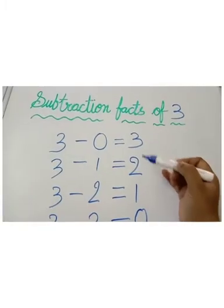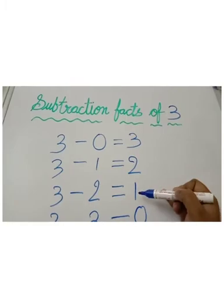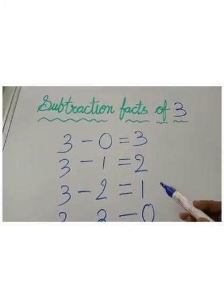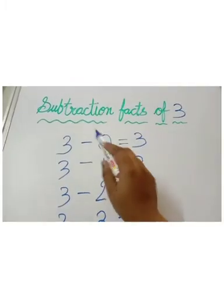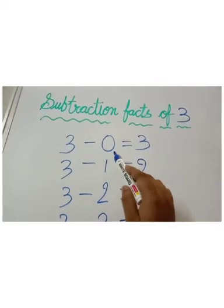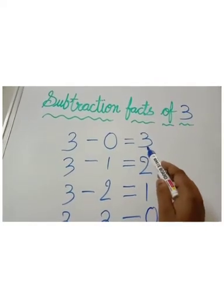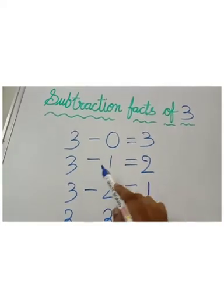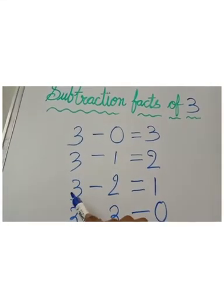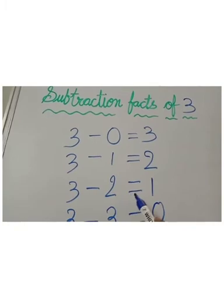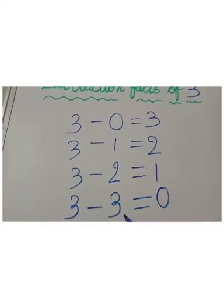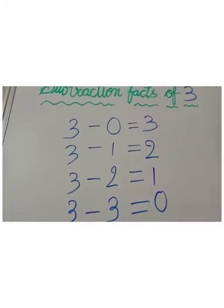3 before 2, 2 before 1, 1 before 0. So subtraction facts of 3: 3 minus 0 is equal to 3, 3 minus 1 is equal to 2, 3 minus 2 is equal to 1, and 3 minus 3 is equal to 0.